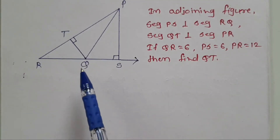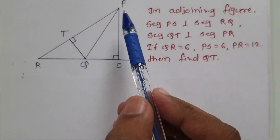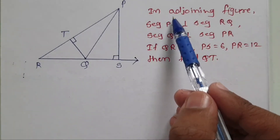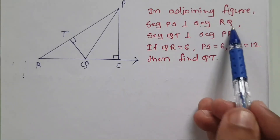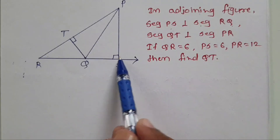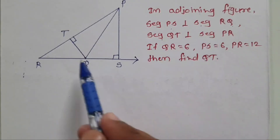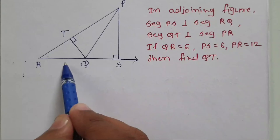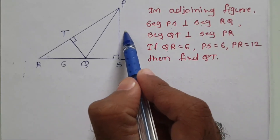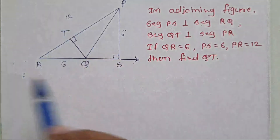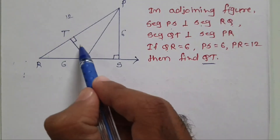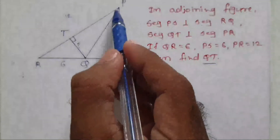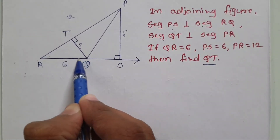The next problem is again based on a diagram. In the diagram we have triangle PSR which is a right angle triangle. Segment PS is perpendicular to segment RQ, and segment QT is perpendicular to segment PR. QR is given to be 6 units, PS is also 6, PR is given to be 12, and from that we have to find QT. Consider triangle PQR; if we take QR as the base, then PS is the height.